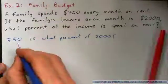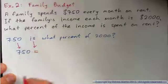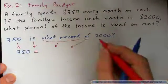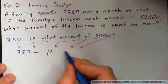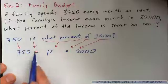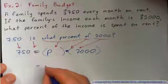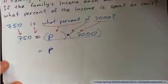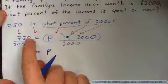We turn this into an equation. 750 equals P times 2,000. To get P by itself, divide both sides by 2,000, so P equals 750 over 2,000. Instead of doing long division right away, let's simplify. Cross the zeros to get 75 over 200. Then divide top and bottom by 5 to get 15 over 40, and divide again by 5 to get 3 over 8.